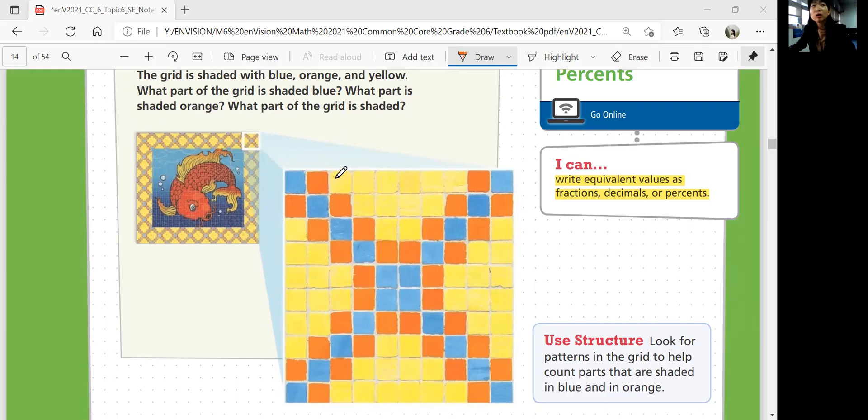First, we want to know how many tiles there are total. So, 1, 2, 3, 4, 5, 6, 7, 8, 9, 10 tiles total horizontally. And 1, 2, 3, 4, 5, 6, 7, 8, 9, 10 tiles total vertically.